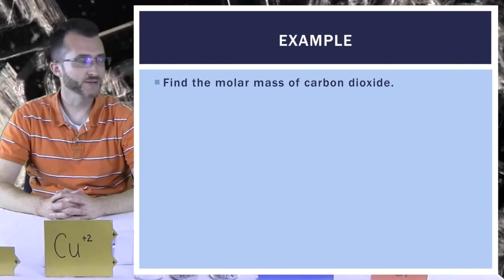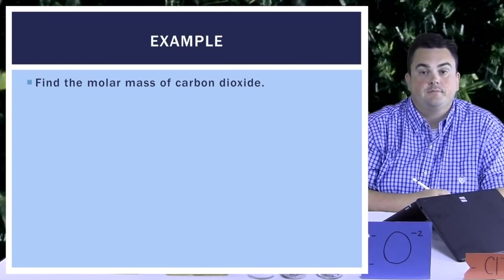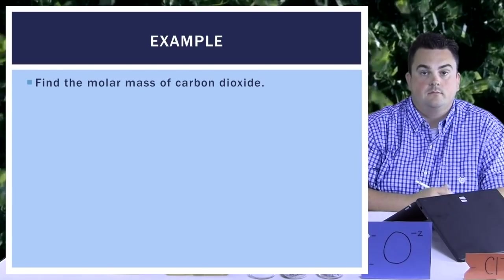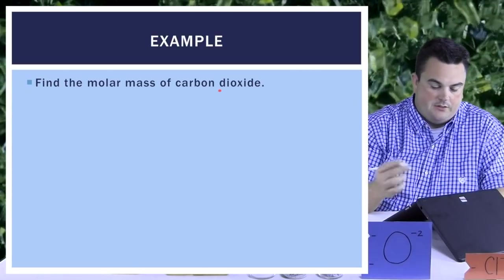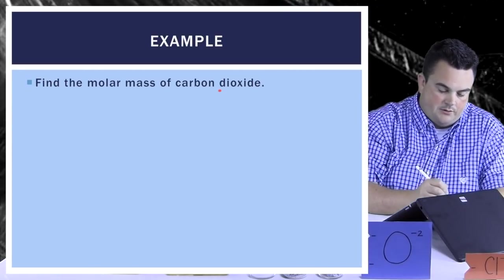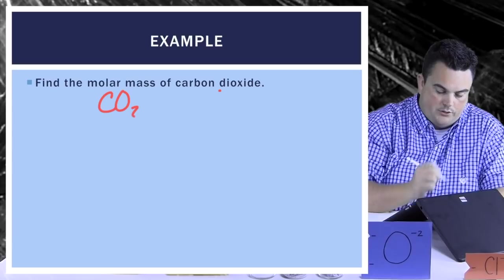Alright, let's do an example. You ready, Phu? I am. Find the molar mass of carbon dioxide. Let's start by writing down the chemical formula for carbon dioxide. Well, it's a pretty easy one. I see prefixes. It's just carbon and two oxygens. CO2.